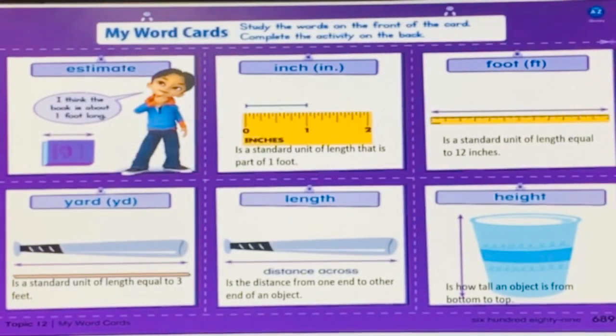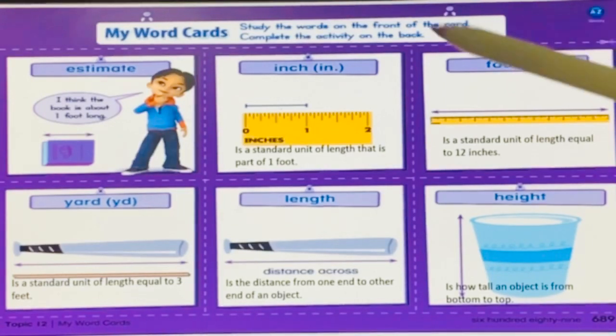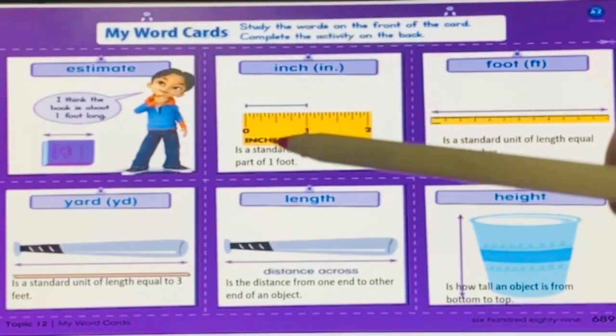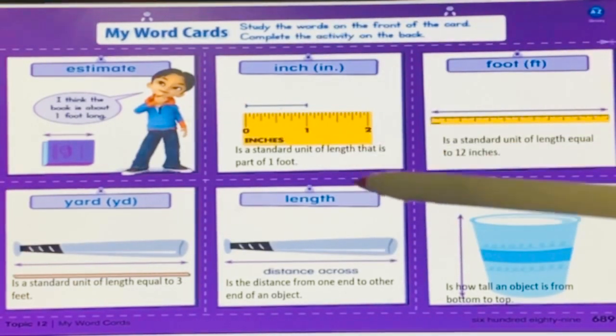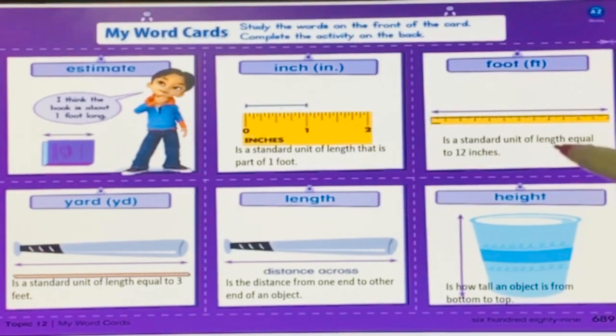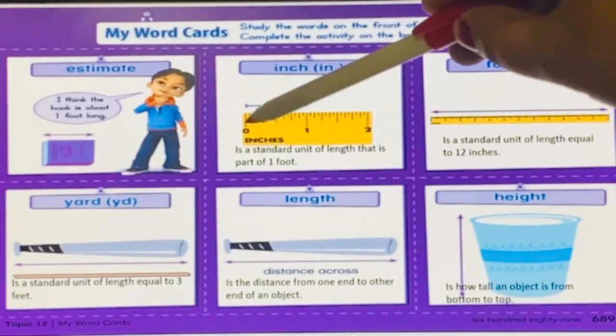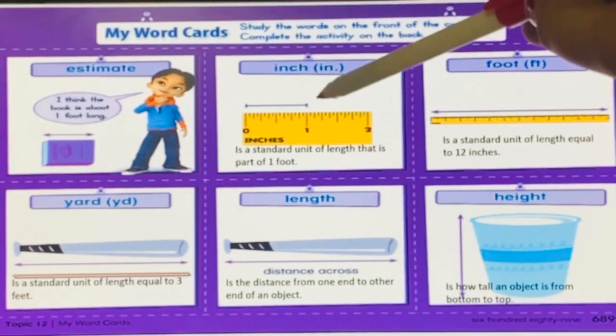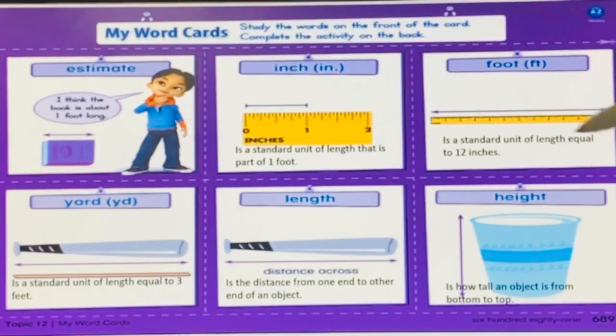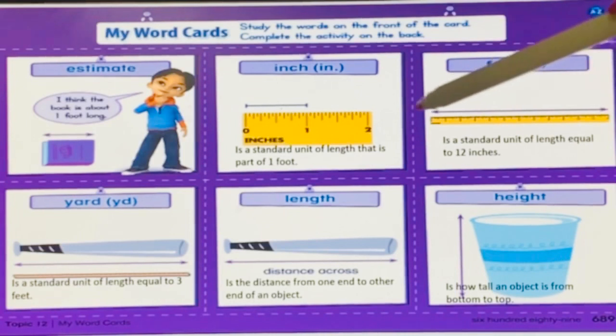So one inch is the standard unit of length that is part of one foot. Now what is foot? Foot is the standard unit of length equal to 12 inches. Means if you have 12 inches like this, that will make one foot, one whole foot.